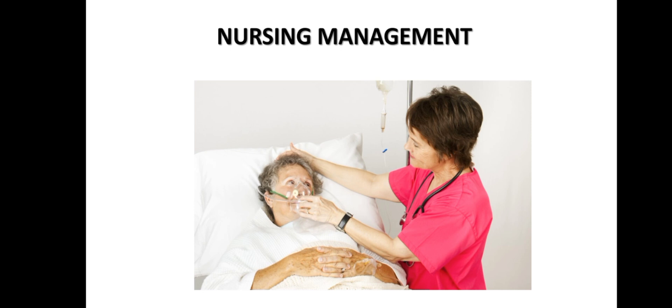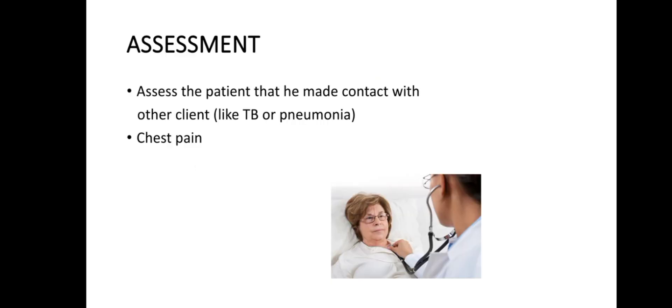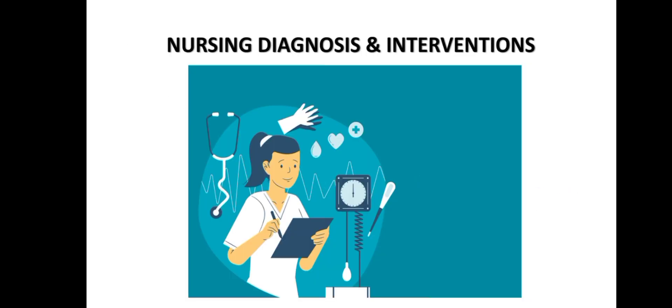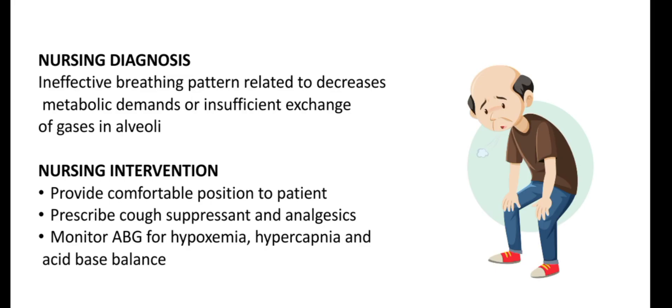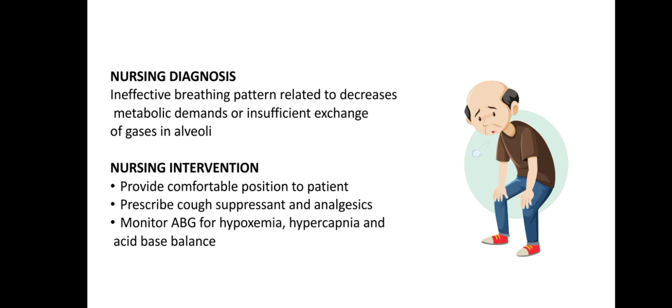Nursing management begins with assessment — determine whether the patient had contact with others with TB or pneumonia, and assess for chest pain. Nursing diagnosis 1: ineffective breathing pattern related to decreased metabolic demands or insufficient exchange of gases in the alveoli. Interventions include: providing a comfortable position, prescribing cough suppressants and analgesics, and monitoring ABG for hypoxemia, hypercapnia, and acid-base balance.